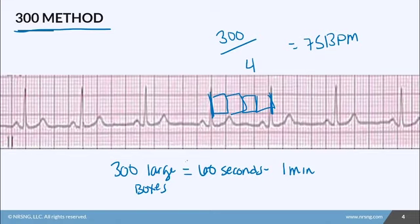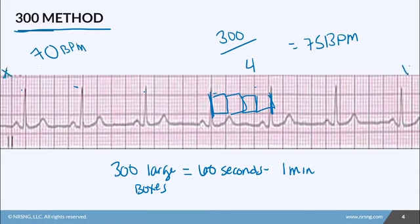This method is more accurate when the rhythm is regular. If the rhythm is irregular, it becomes harder because you won't have the same number of boxes between each QRS. Notice that this is the same EKG strip as the previous slide — counting the QRS gave us 70, while the 300 method gives 75, making it slightly more specific and reliable.